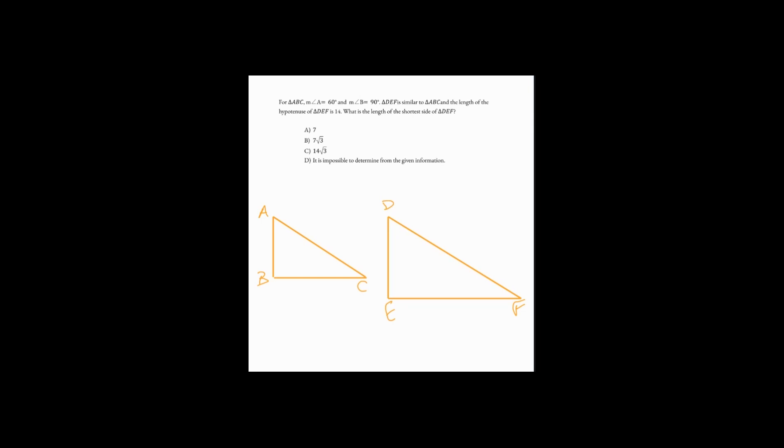It says, for triangle ABC the measure of angle A is 60 degrees and the measure of angle B is 90 degrees. Go ahead and put those in there. Use our little box for a right angle.